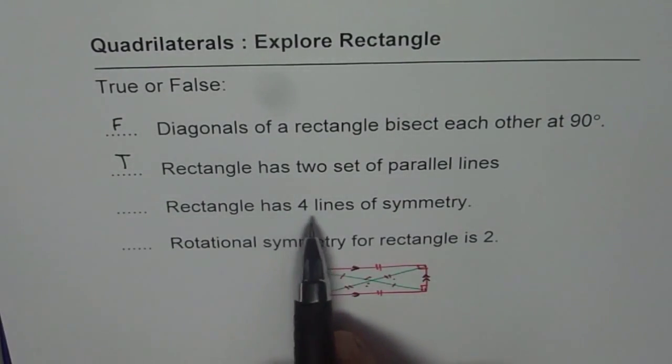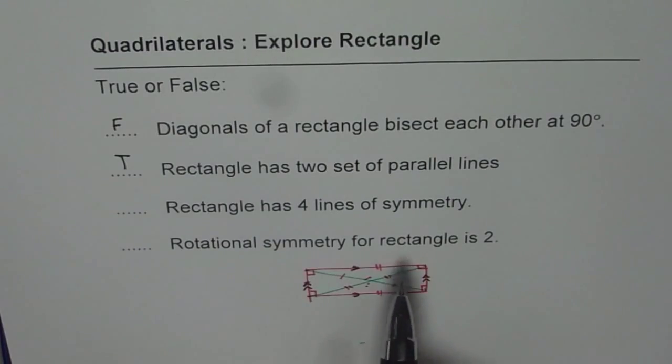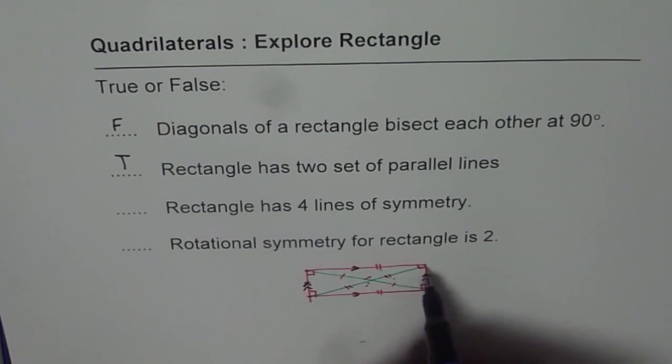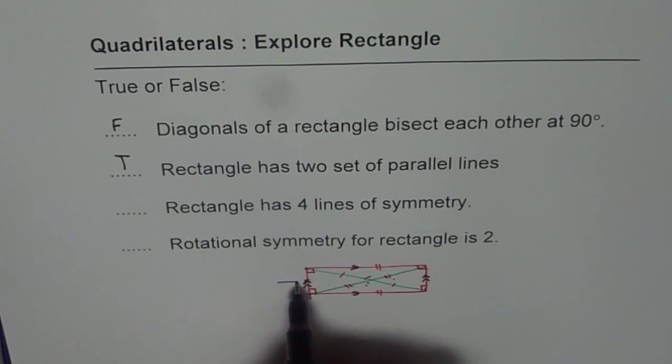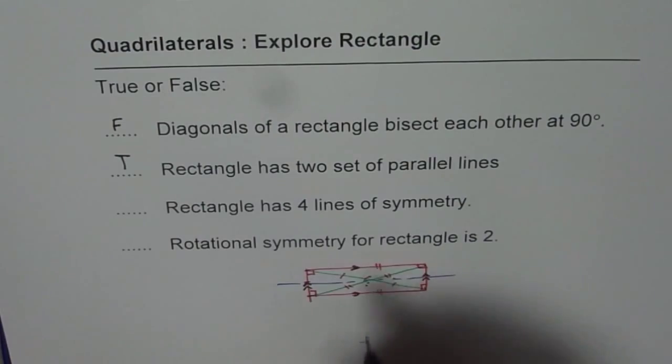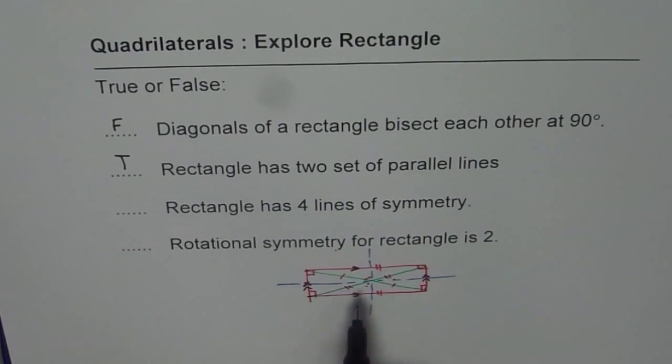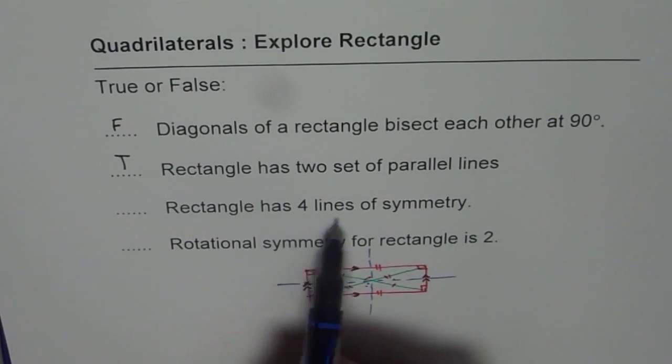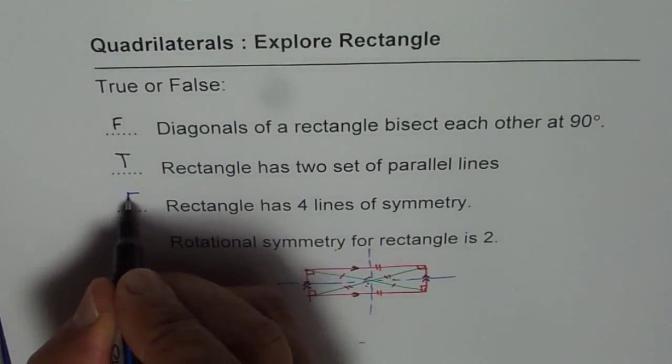Rectangle has four lines of symmetry. Well, rectangle has only two lines of symmetry. Diagonals do not divide it symmetrically. The lines of symmetry are one horizontal, the other one is vertical. If you fold the rectangle along this line, it will not overlap. So we have a rectangle which has only two lines of symmetry, not four. So this one is false.